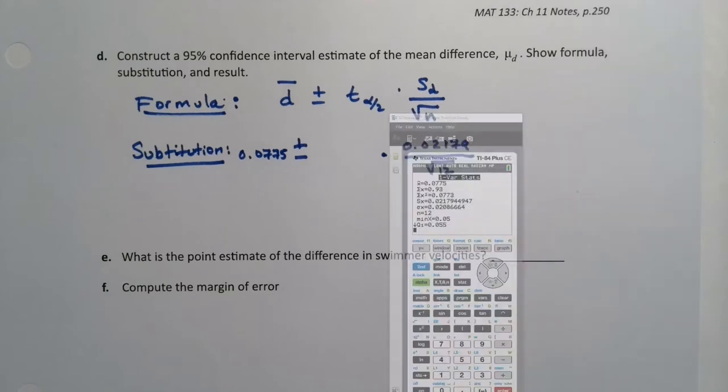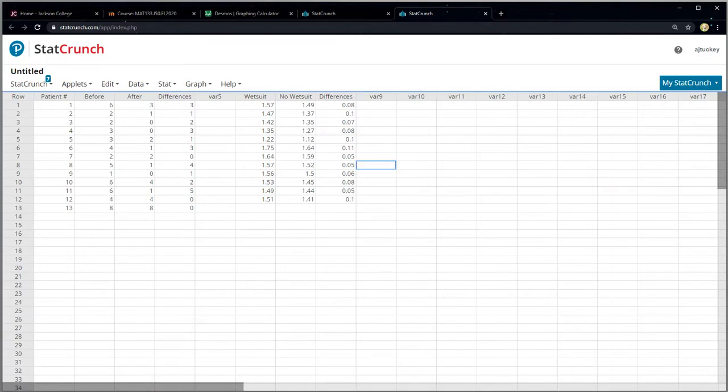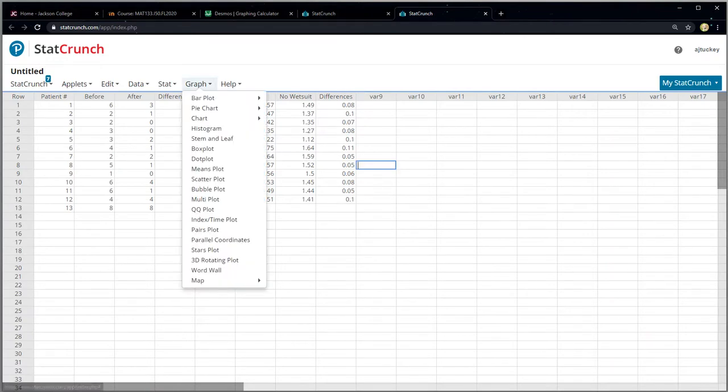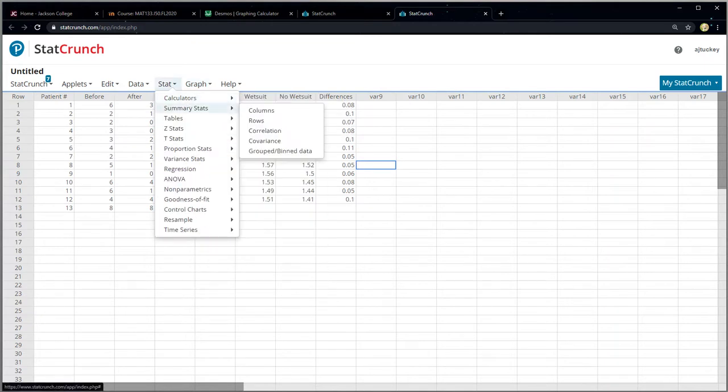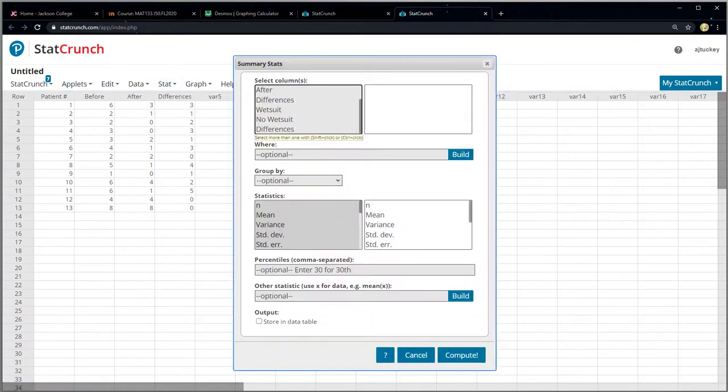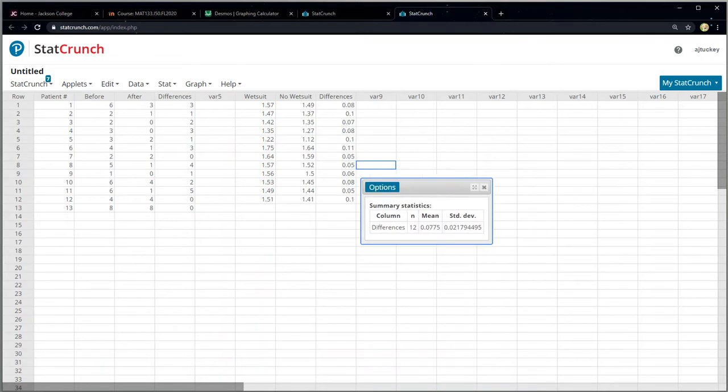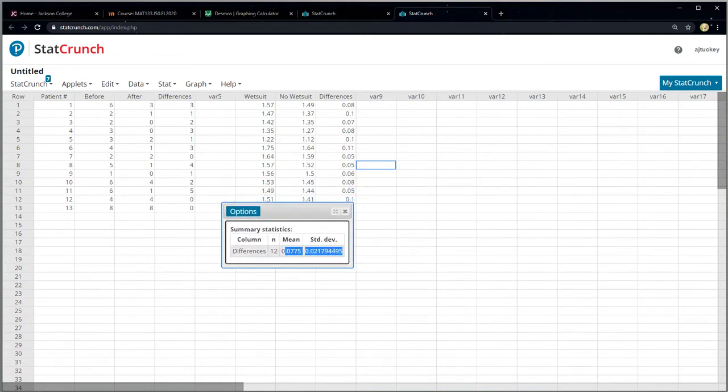I can also get them out of StatCrunch if you're working with StatCrunch instead. I have those differences right here. I can run Stat, Summary Stat, Columns on those differences. Make sure you click on the correct one because it's just going to name them differences. We want the n, the mean, and the standard deviation. Click compute. There we have the same values: 0.0775, 0.02179, and 12.